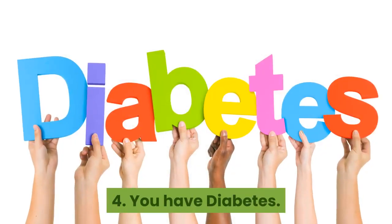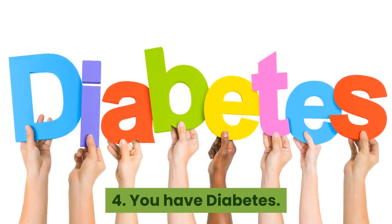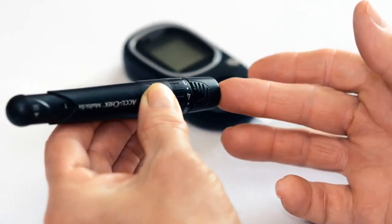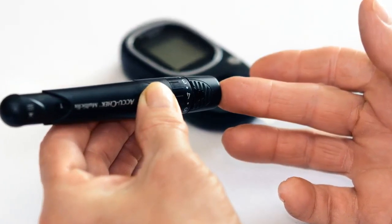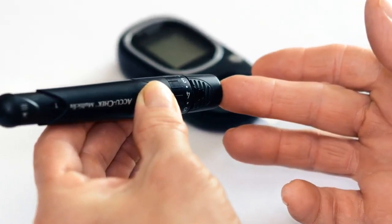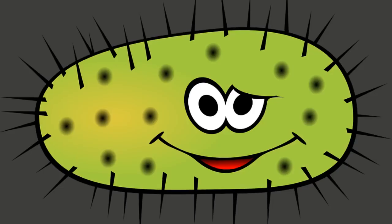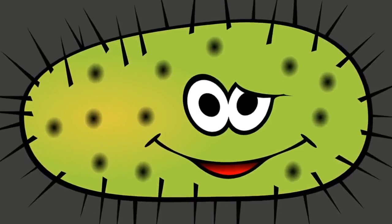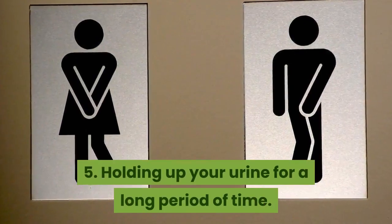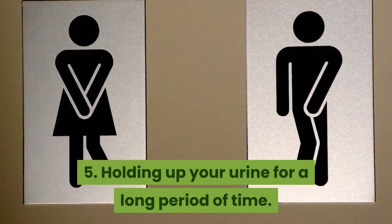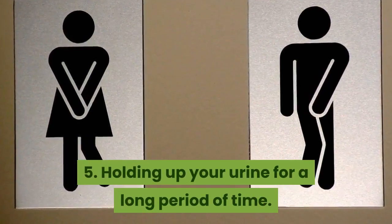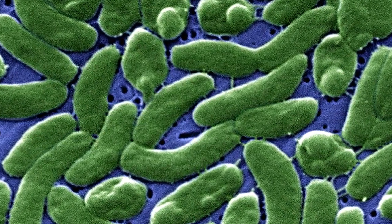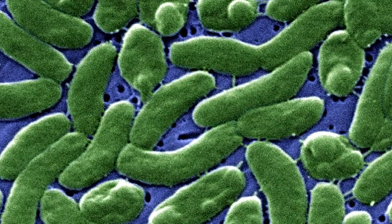4. You have diabetes. A diabetic person is most likely to be excreting sugar in the urine, and bacteria love sugar — they are most likely to thrive and multiply. 5. Holding up your urine for a long period of time. This makes the environment favorable for the bacteria to multiply.